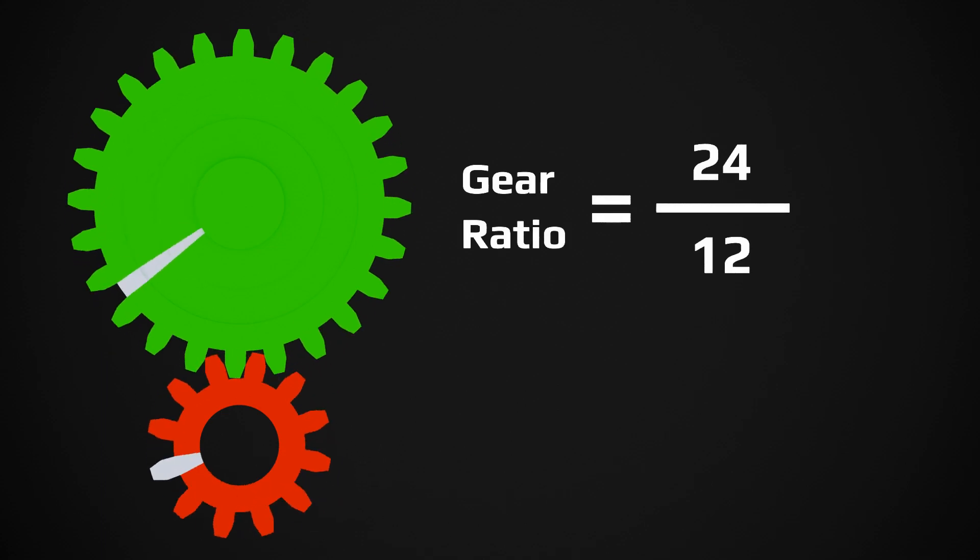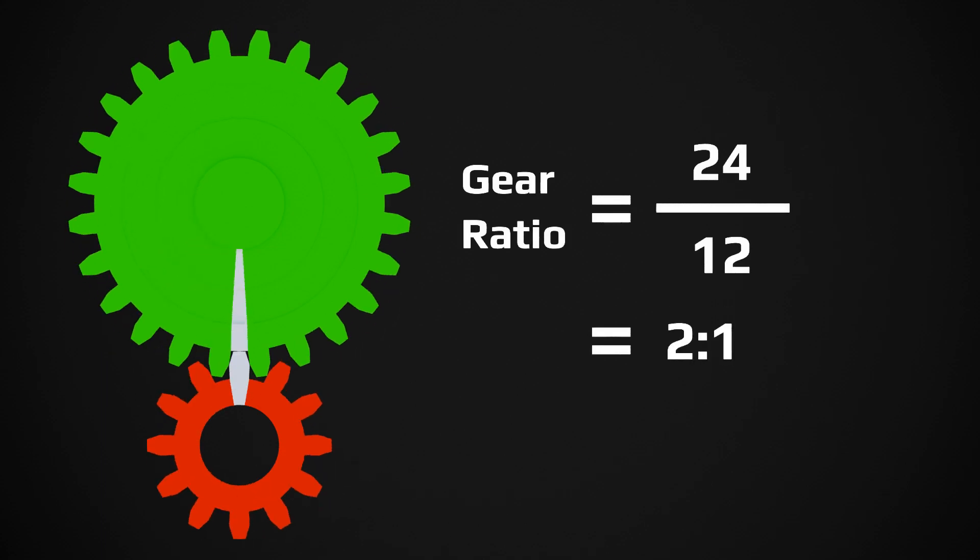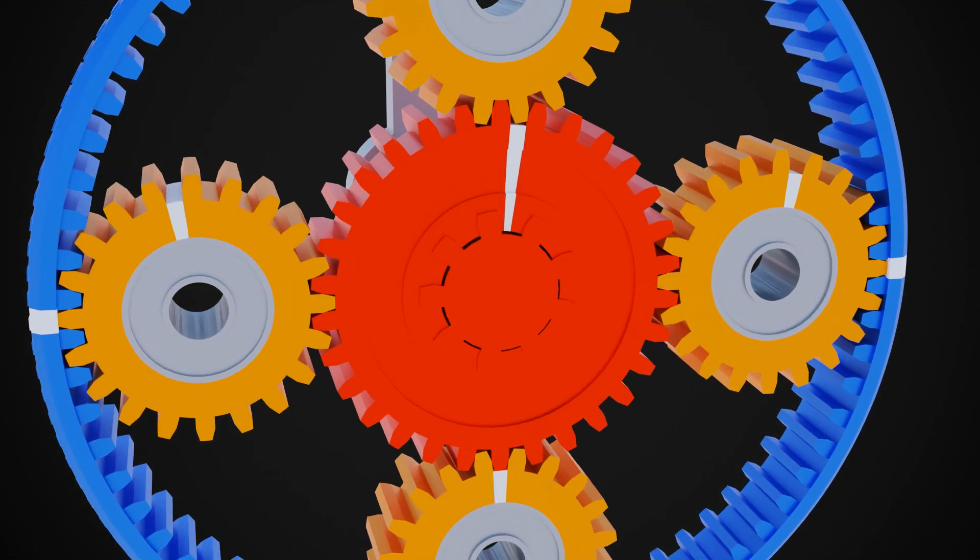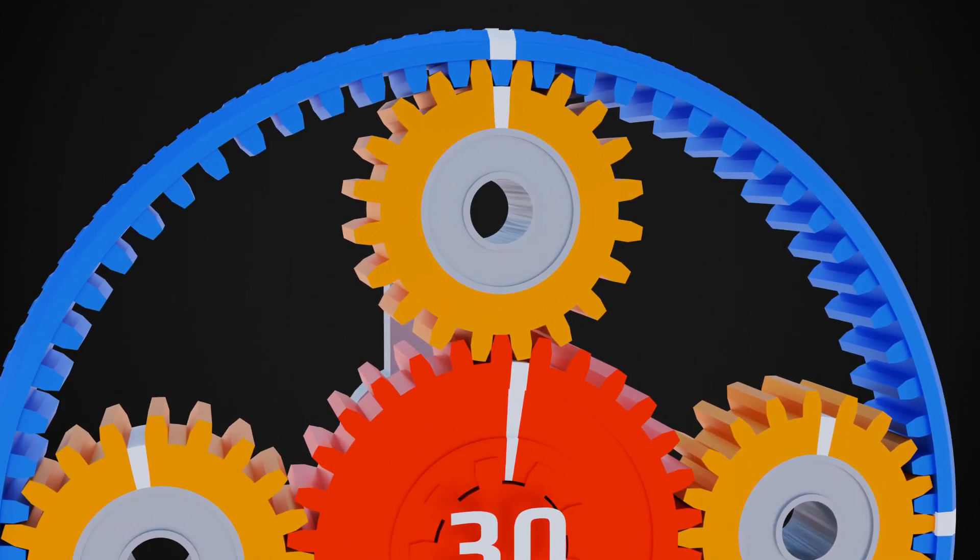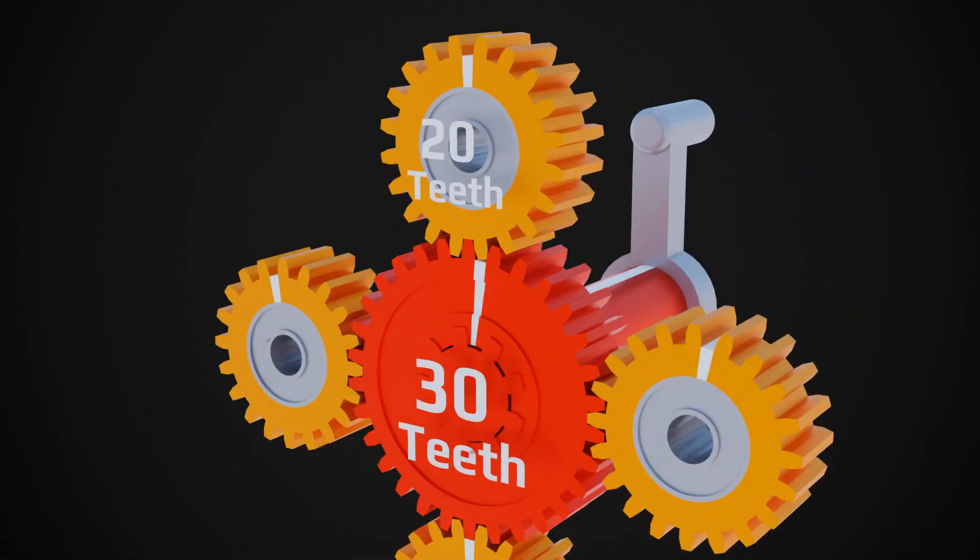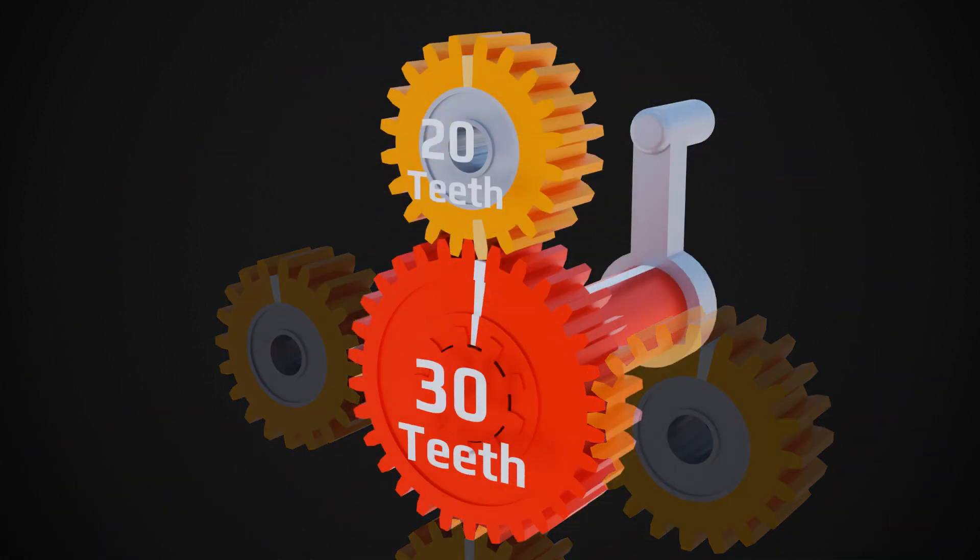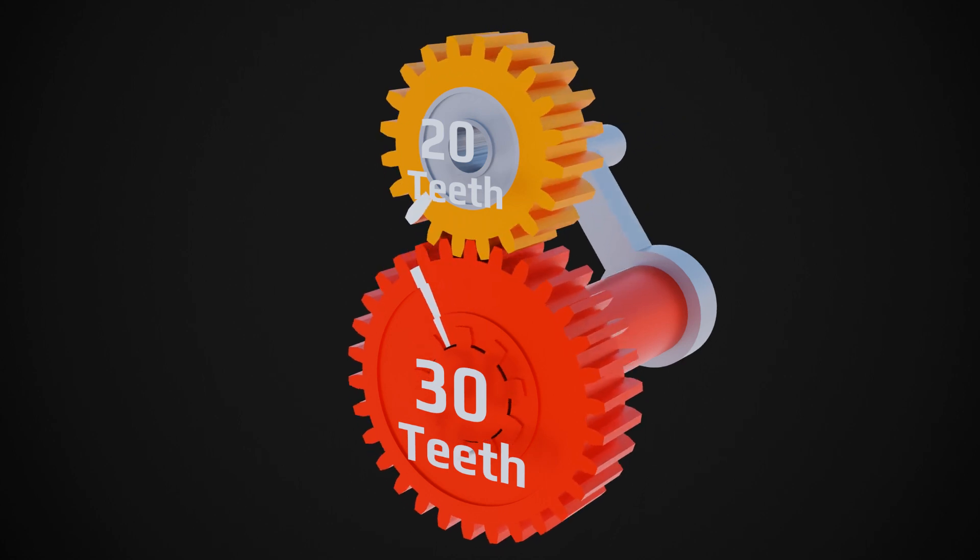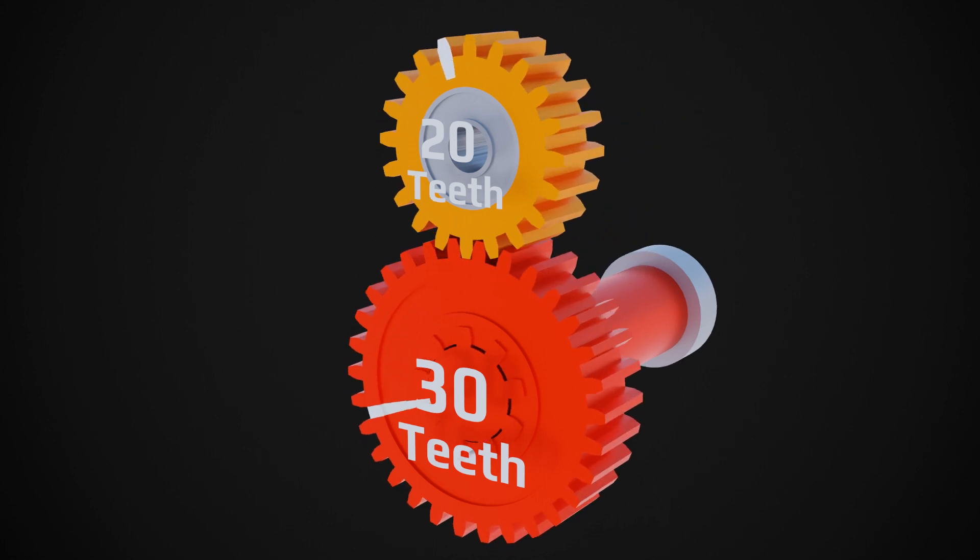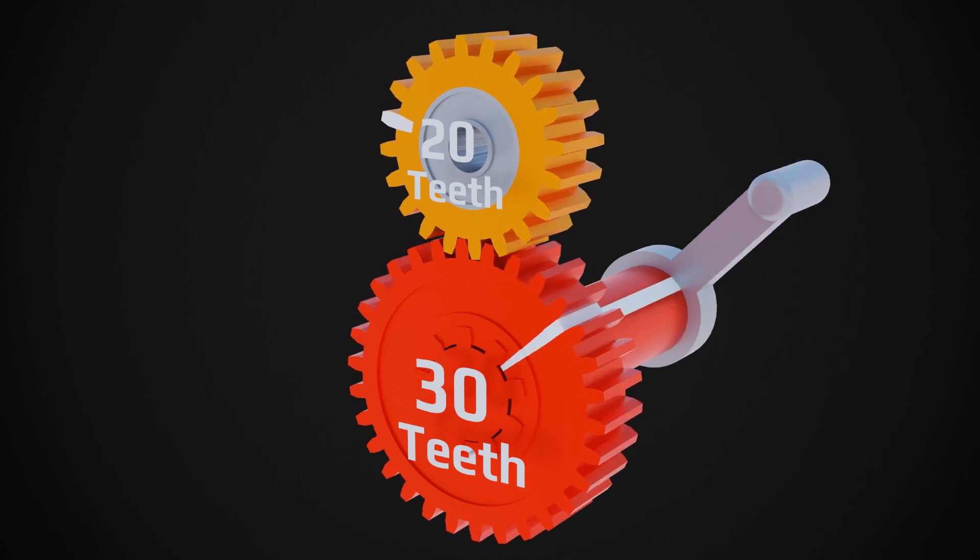In this planetary gear set, sun gear has 30 teeth and each planet gear has 20 teeth. That means for one complete rotation of sun gear will make the planet gear rotate 30 teeth. But planet gear has only 20 teeth, so planet gear will complete one and a half rotation if the carrier is locked.